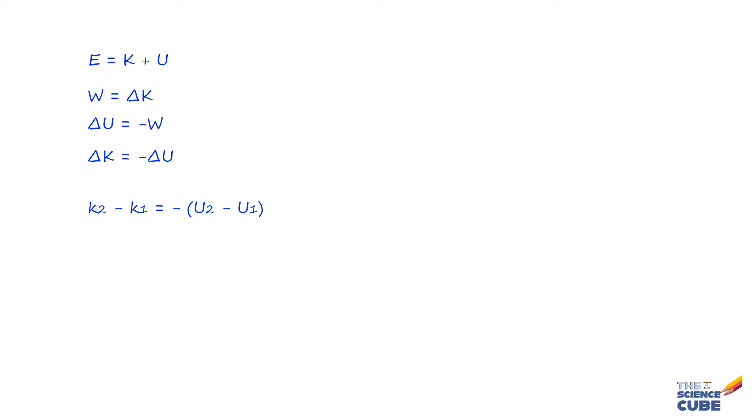Now we can rearrange the terms in this equation by pulling U1 this side and K1 to the other. And what we get is K2 plus U2 is equal to K1 plus U1.